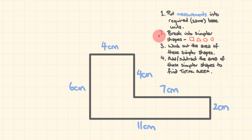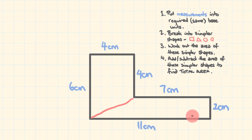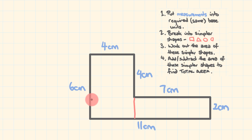The next thing we're going to do is break this into simpler shapes. Just a word of caution here — I've seen students put a line right here to break this shape into two separate shapes, but that doesn't make it simpler. You're left with two shapes that aren't rectangles or triangles, so they're no easier to work out. We're looking for simpler shapes like rectangles, triangles, circles, or semicircles. We're going to break this L-shape into two rectangles by putting a line here. We've broken it into rectangle one and rectangle two.